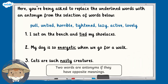All done? Fantastic. Let's take a look at the first sentence: I sat on the bench and untied my shoelaces. Well done if you said the word untied — it is the antonym of tied. The prefix un has been added to change the meaning of the root word.